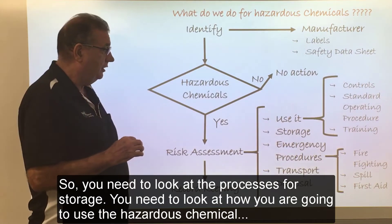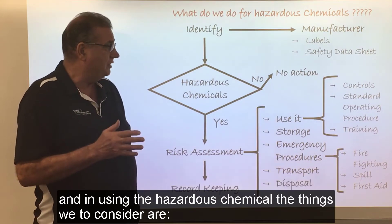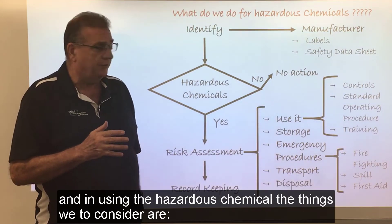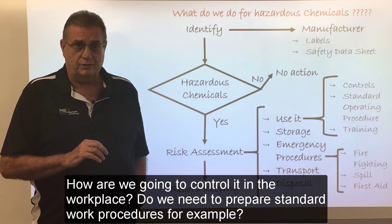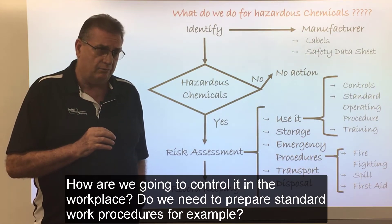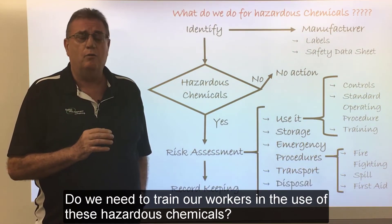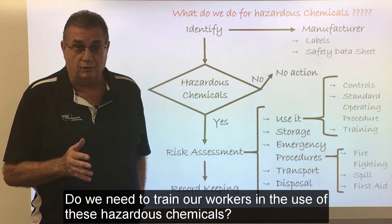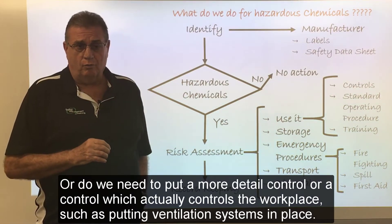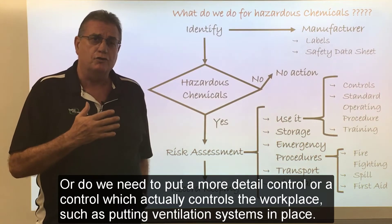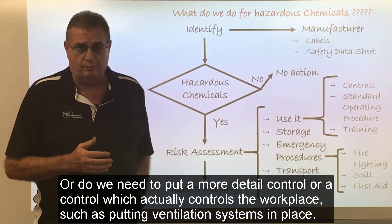You need to look at how you are going to use the hazardous chemical. In using it, we need to consider how we're going to control it in the workplace. Do we need to prepare standard work procedures? Do we need to train our workers in the use of those hazardous chemicals? Or do we need to put more detailed controls in place, such as putting ventilation systems in?